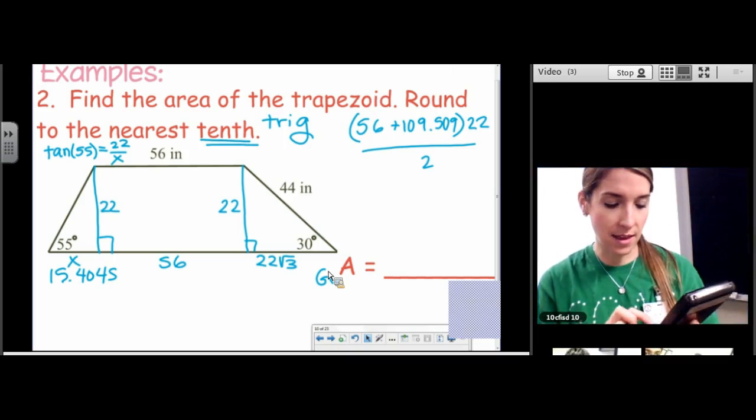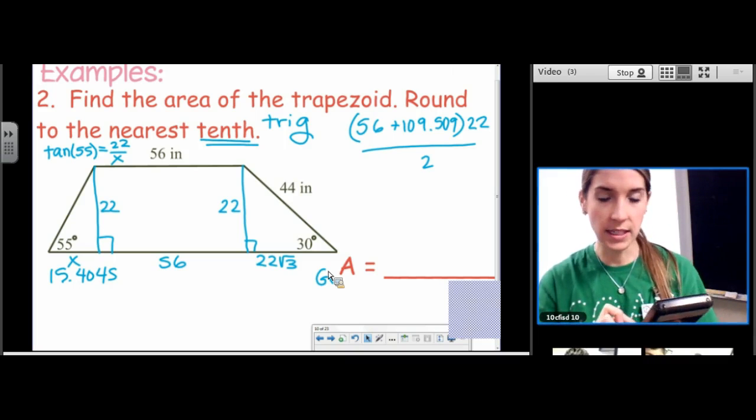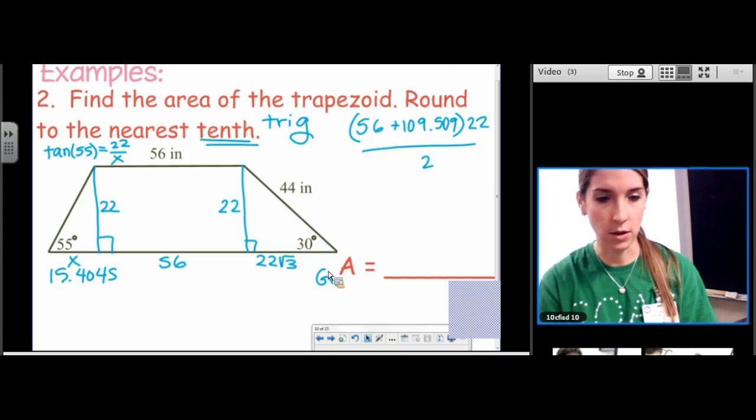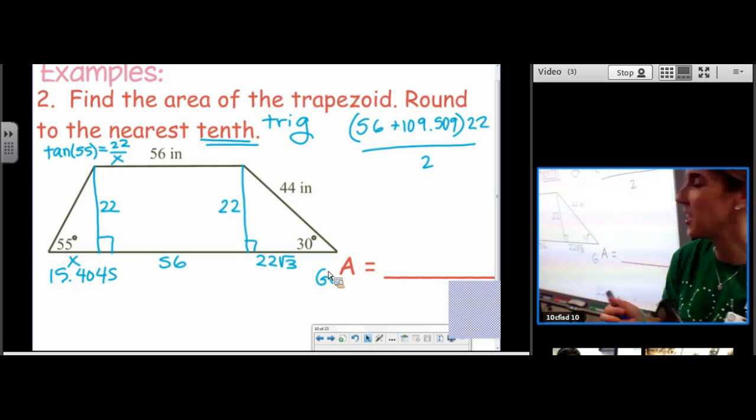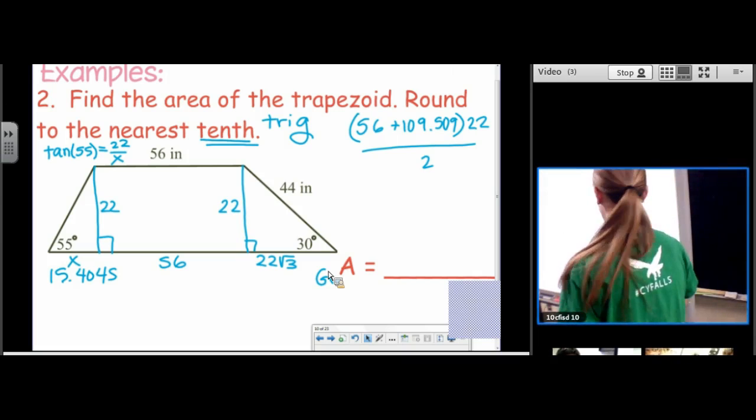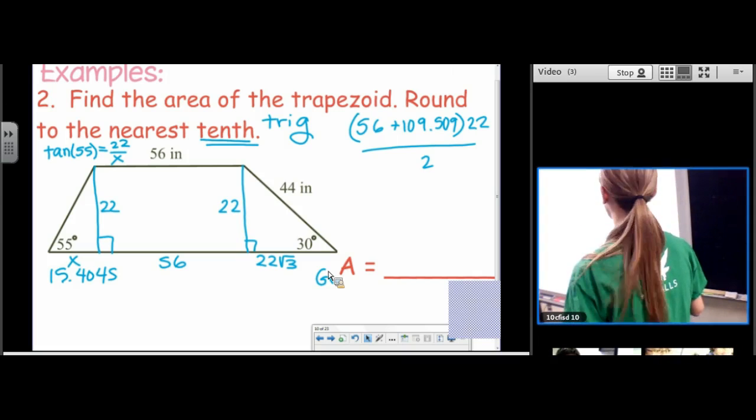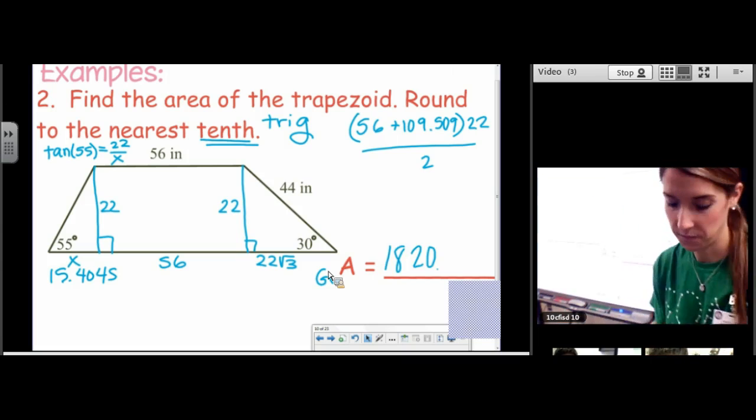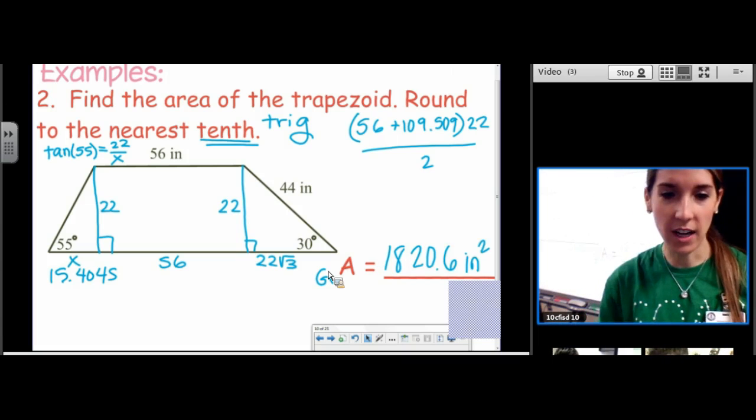So I'm going to take this one. I'm going to add 56. I'm going to multiply it by 22. I'm going to divide by 2. Our savior. Here, good job. 1,820.6 inches squared. A very large trapezoid.